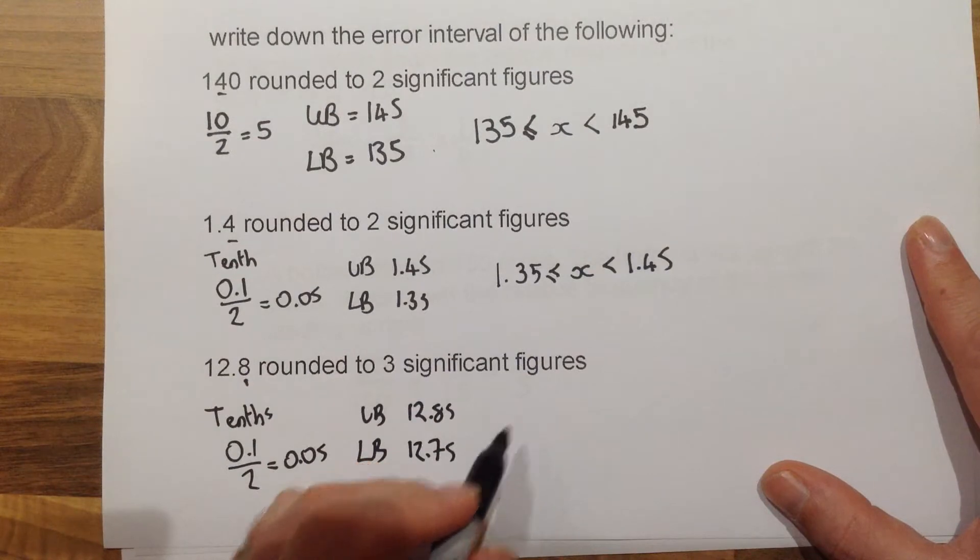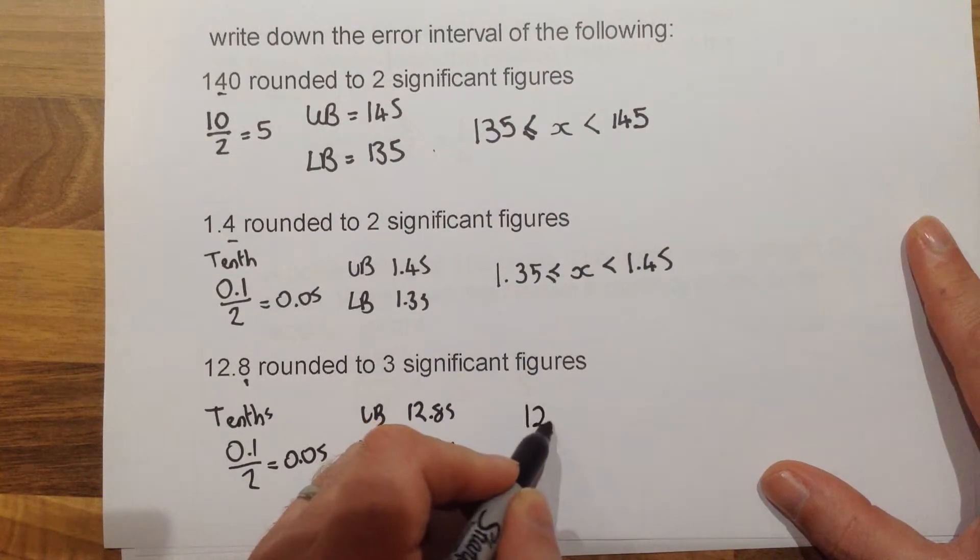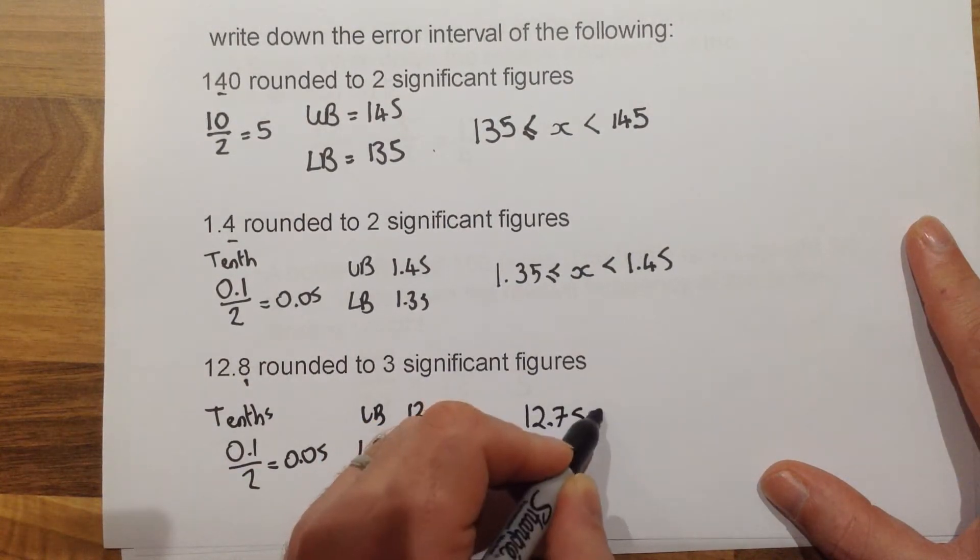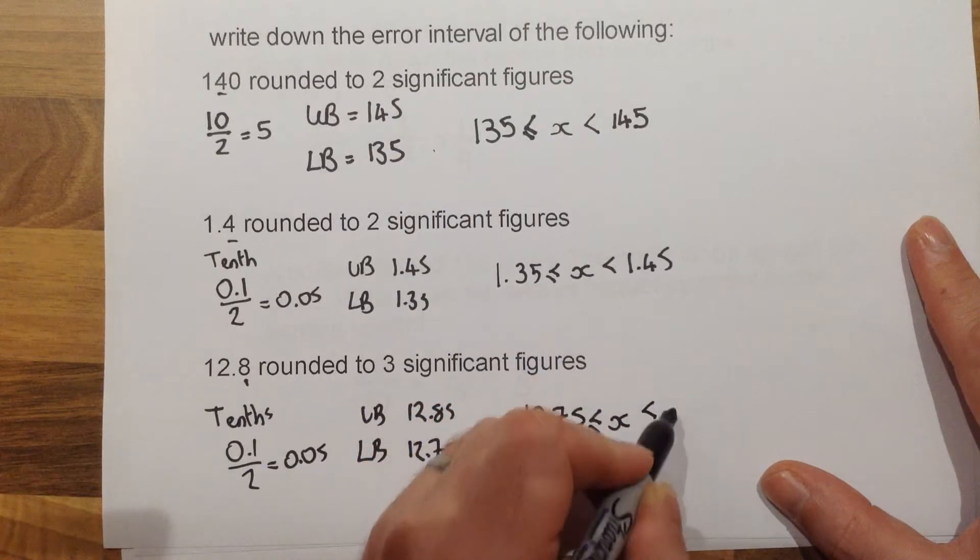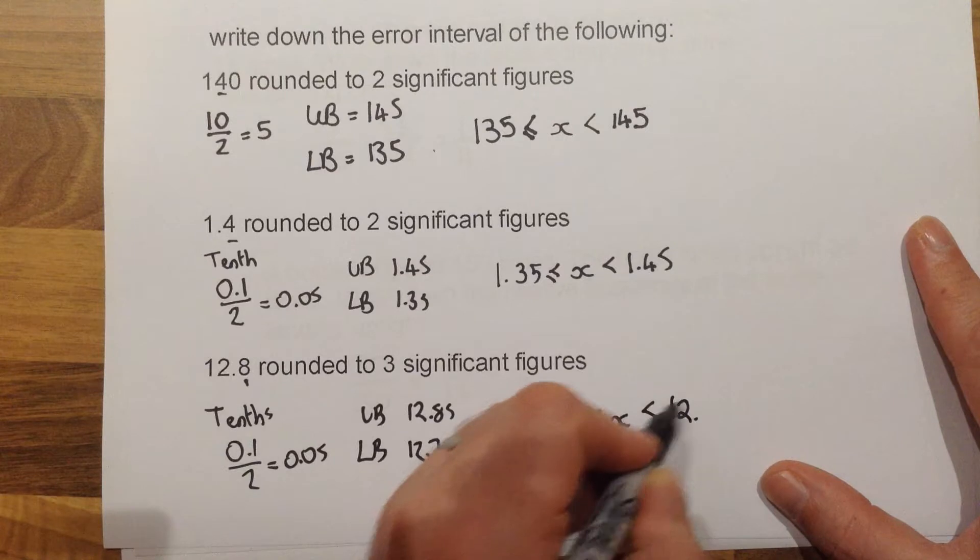So again, the final section, our error interval, 12.75 less than or equal to X less than 12.85.